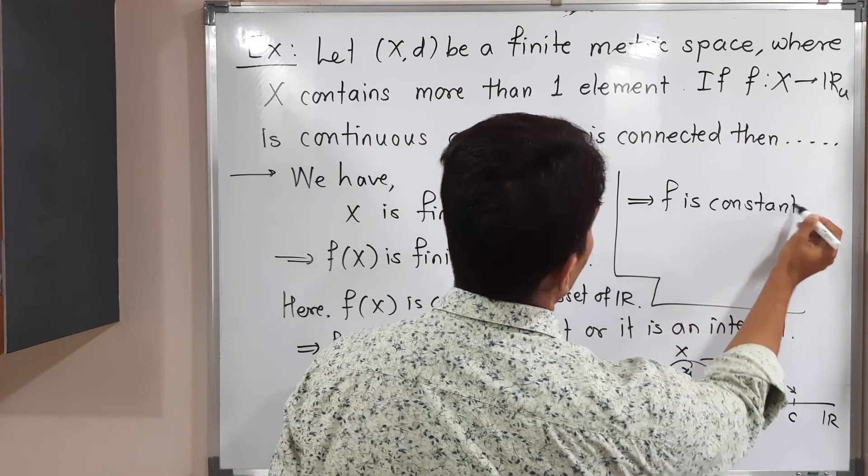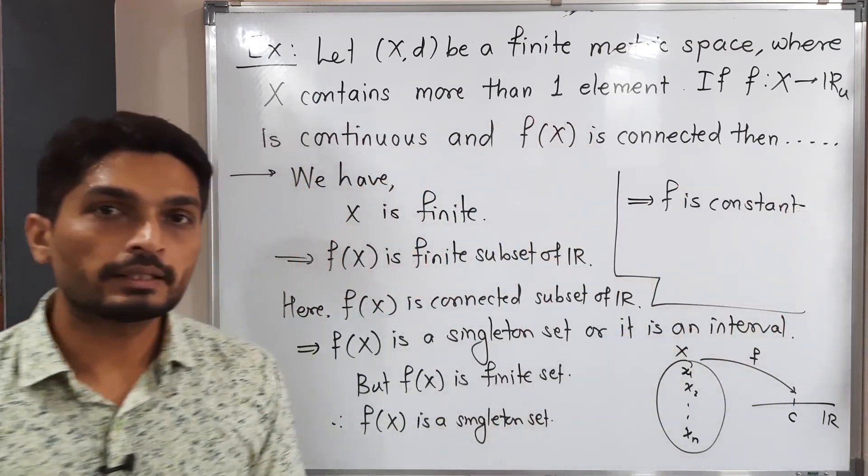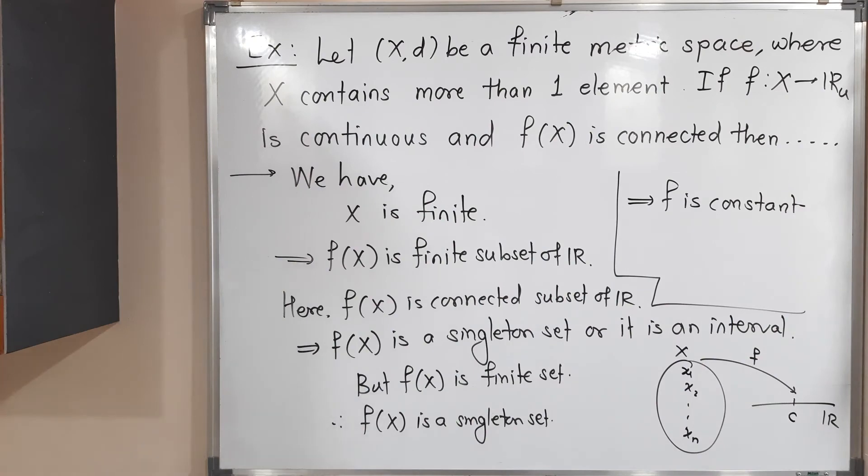Our conclusion is: f is constant. That means if we have all these conditions, then that function should be a constant function. Make a screenshot of it. Thank you, bye bye.